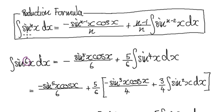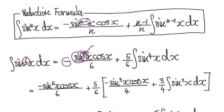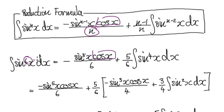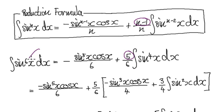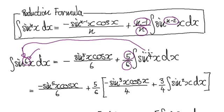So if you want to integrate — n is 6 here — just blindly follow this formula. It would be minus sine 1 less, so that would be 5. The cosine stays the same, over n, which is 6. And then plus n minus 1, which would be 5 over n, which is 6. And then sine 2 less — since n is 6, 2 less would be 4. So that would take you to here.